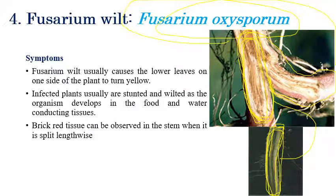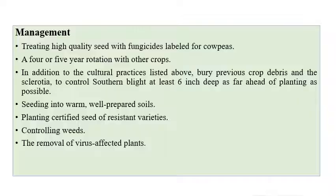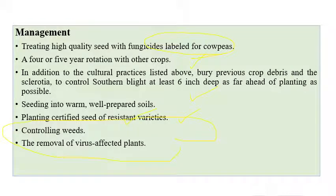Coming to the management aspects of Fusarium wilt, using high quality or labeled seeds of cowpea and crop rotation along with cultural practices, planting resistant varieties, controlling weeds, and removal of virus-infected plants from the field can give relief from these diseases.